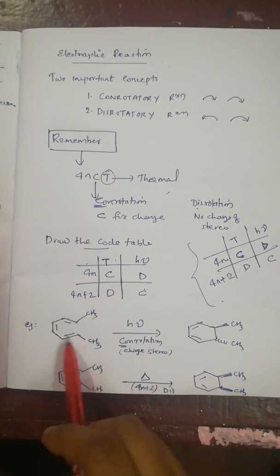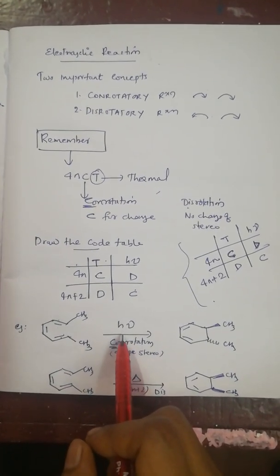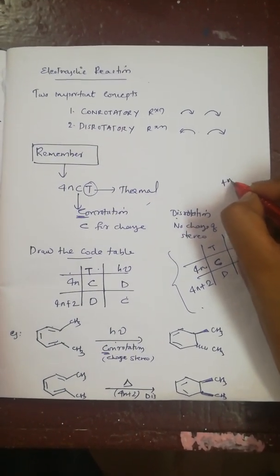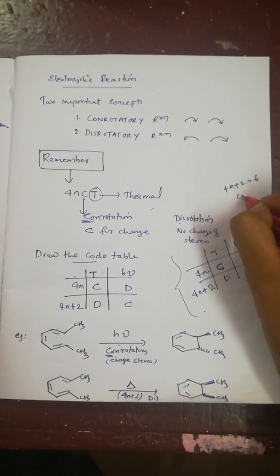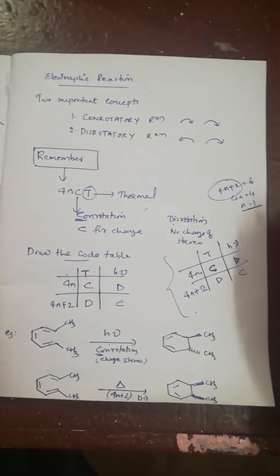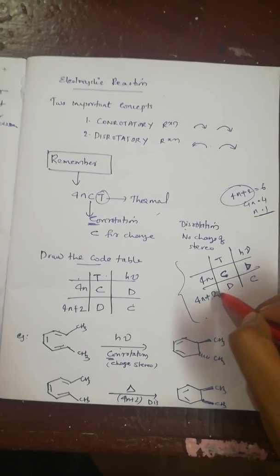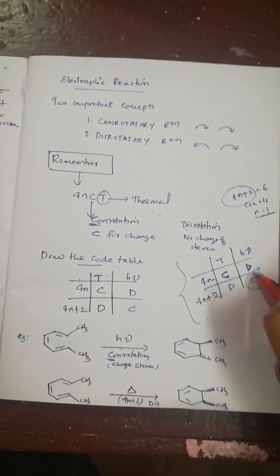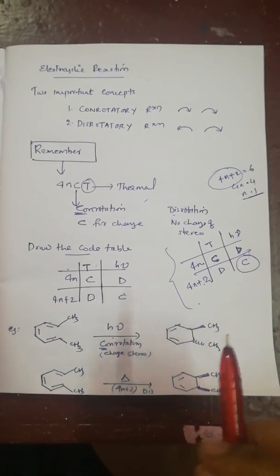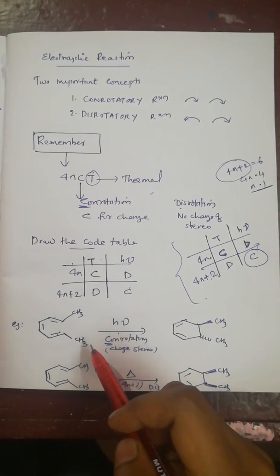Let's see a simple example. How many pi electrons are involved? Counting: 2, 4, 6 — six pi electrons are involved, and the reaction is light driven. Six pi electrons means this is a 4n+2 reaction. For 4n+2 with light, the code gives us C — meaning you should change the stereochemistry of the product.